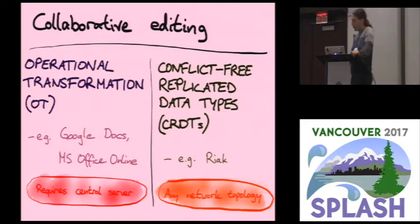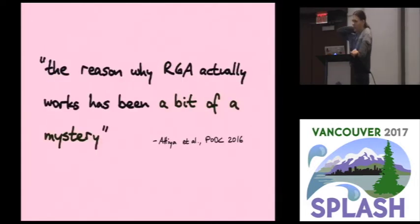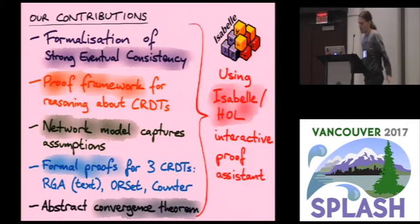Given all of the problems that I mentioned with operational transformation in the past, we thought it would be very good to formally verify these algorithms so that these very subtle mistakes that have occurred in previous algorithms we can hopefully avoid. Even with CRDTs it's not all straightforward. Here's a lovely quote from a paper on which Sebastian here was actually a co-author last year. It talks about RGA which is one particular CRDT for text editing and says the reason this algorithm works has been a bit of a mystery. I feel that algorithms are designed by humans for a purpose, there shouldn't really be much of a mystery around these things. That is why we work on formal verification to hopefully remove some of the mystery.